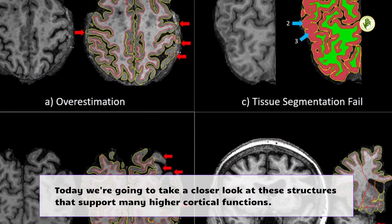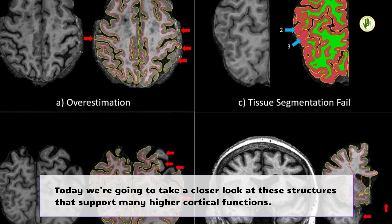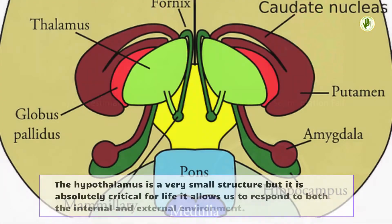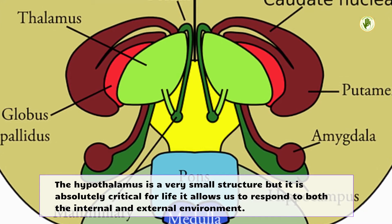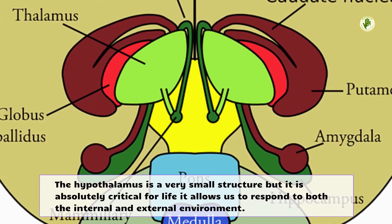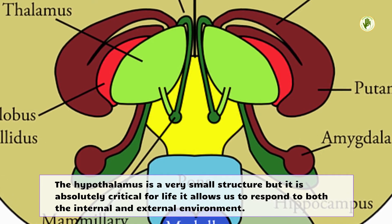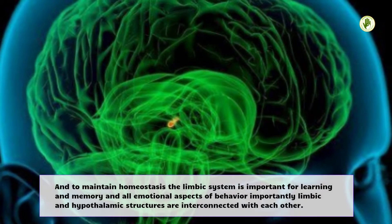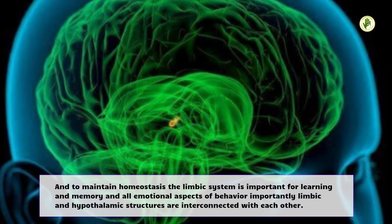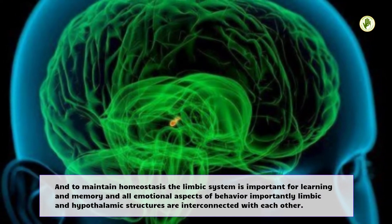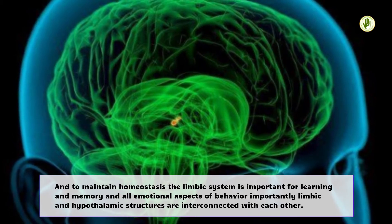Today we're going to take a closer look at the structures that support many higher cortical functions. The hypothalamus is a very small structure but it is absolutely critical for life, allowing us to respond to both the internal and external environment. To maintain homeostasis, the limbic system is important for learning, memory, and all emotional aspects of behavior. Importantly, limbic and hypothalamic structures are interconnected with each other.